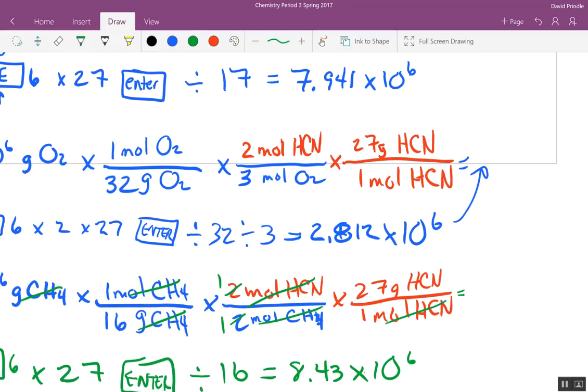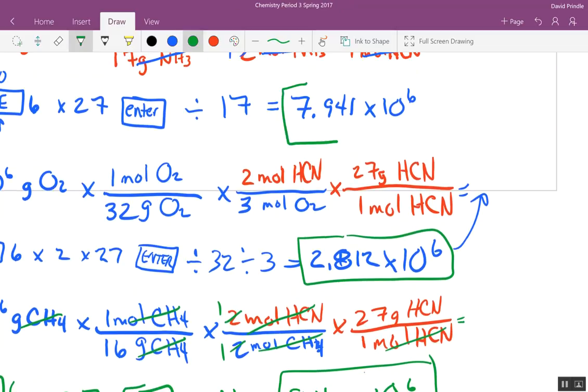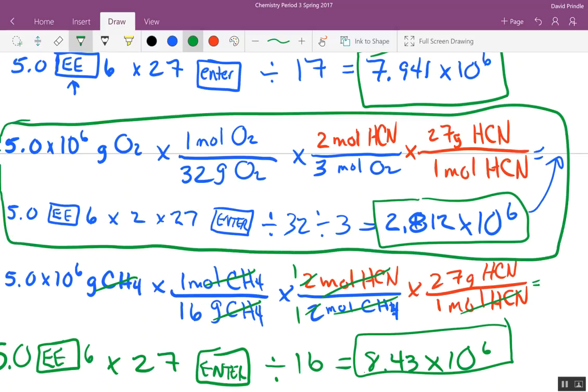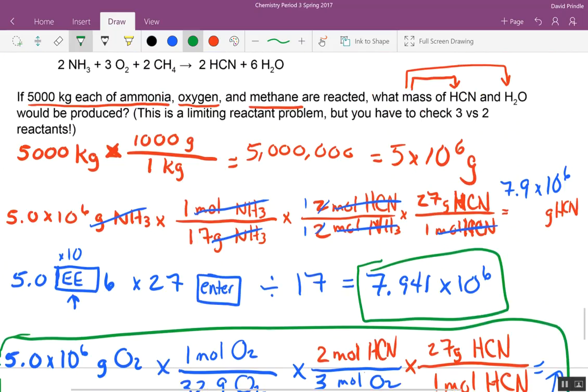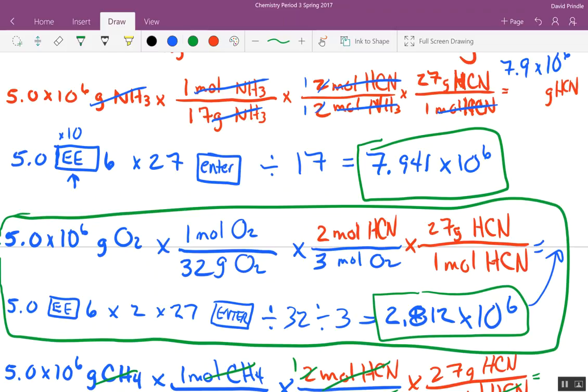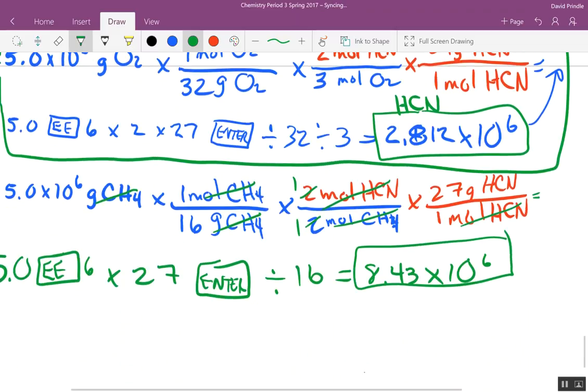So which one is the limiting reactant? We got an answer of two point eight, eight point three, and seven point nine. Which one's the limiting reactant? Haley? The O2. The O2. Now the O2 is the limiting reactant. So the question comes back to what mass of hydrogen cyanide are we going to make and how much water are we going to make. So this is how much HCN we're going to make because it's limited by the amount of oxygen. And if oxygens are limiting reactant that will limit how much water we make. So you only have to do one more problem here.